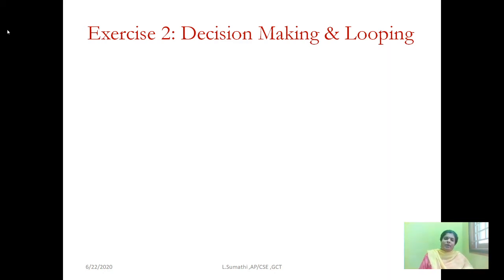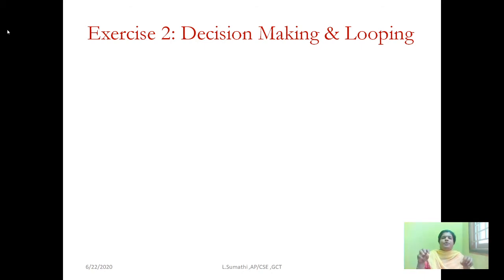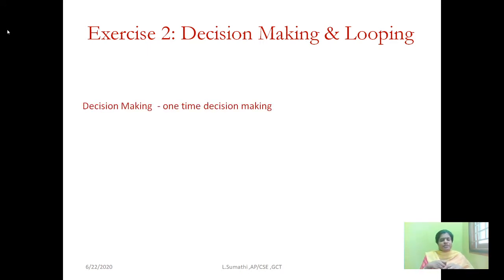Hello everyone, today we are going to see the second exercise of decision making and looping structure in C. Before we start with the program, we will see what you mean by decision making. Decision means you want to pick a choice from the available list of options. If you want to make such a choice only once, then you go for a decision making structure.